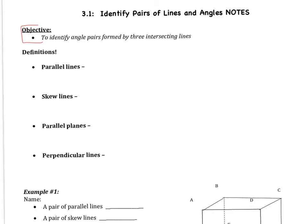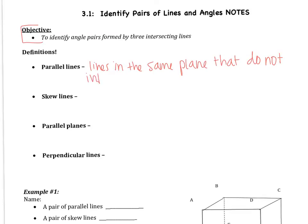You're not going to need a calculator — there's not going to be too many numbers today. We're going to start out with four definitions. The first definition is parallel lines, which you've probably learned before. Parallel lines are lines in the same plane that do not intersect — they're located in the same plane, but they don't intersect.